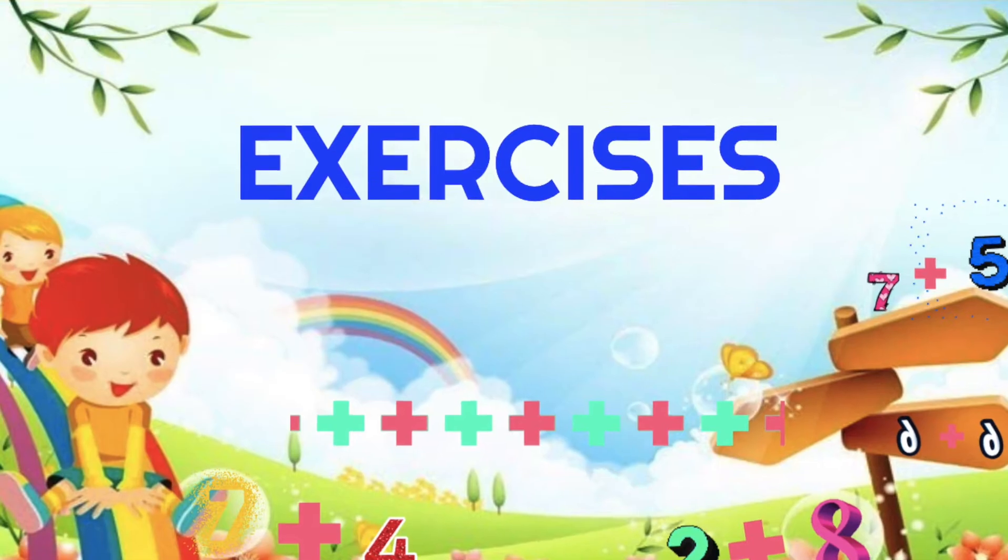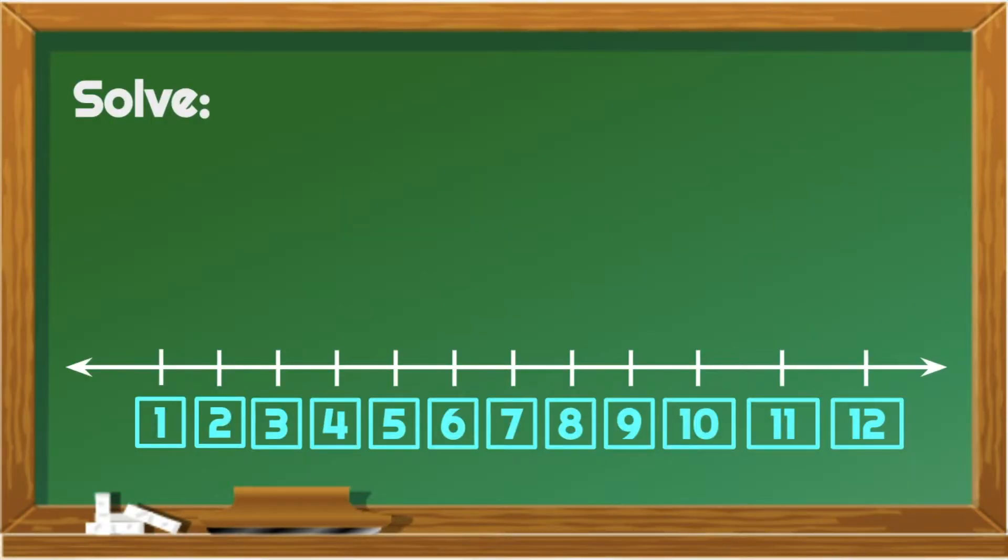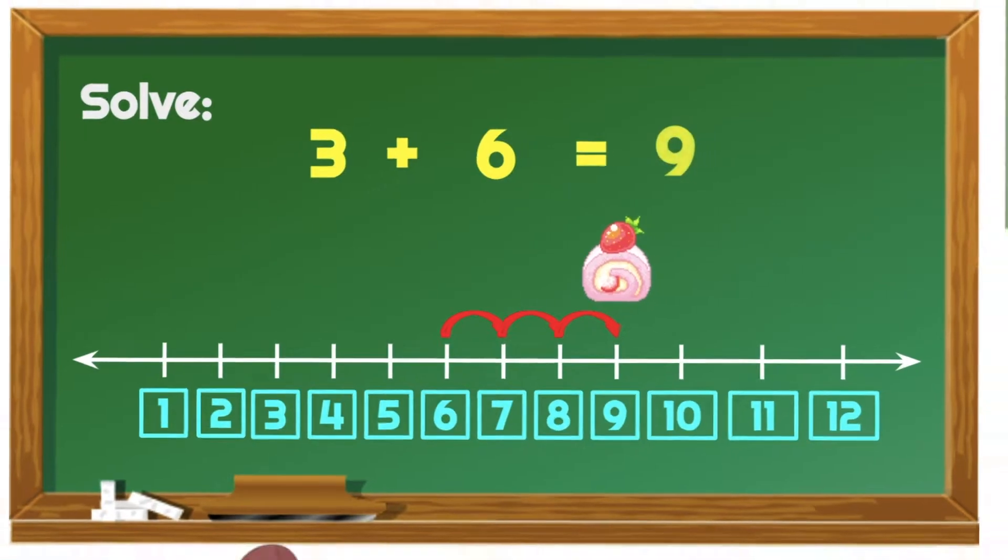Let's add more numbers. Number 1. 3 plus 6 is equal to? From 6, let's count on. 7, 8, 9. That's the way. 3 plus 6 is equal to 9.